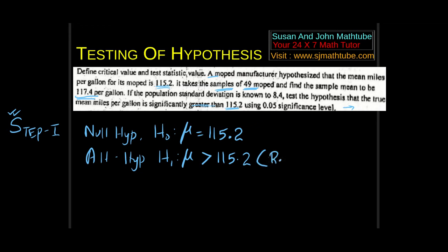If you see not equal to, it's two-tailed — and in two-tailed the risk level will be alpha by 2, split across both tails. If it is greater than, it is right-tailed. If it is less than, it is left-tailed.